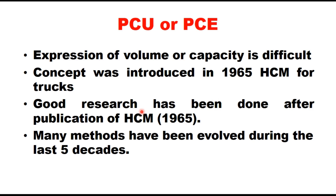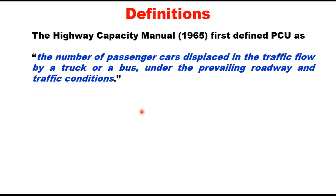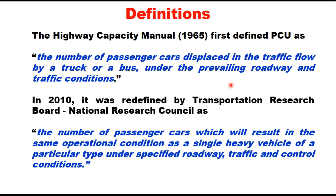Good research has been done since publication of the HCM 1965 manual and many methods have evolved during the last six decades. Various organizations have given different definitions of PCU. The Highway Capacity Manual in 1965 first defined PCU as the number of passenger cars displaced in the traffic flow by a truck or bus under prevailing roadway and traffic conditions. In 2010 it was redefined by the Transportation Research Board as the number of passenger cars that will result in the same operational condition as a single heavy vehicle of a particular type under specified roadway, traffic, and control conditions.